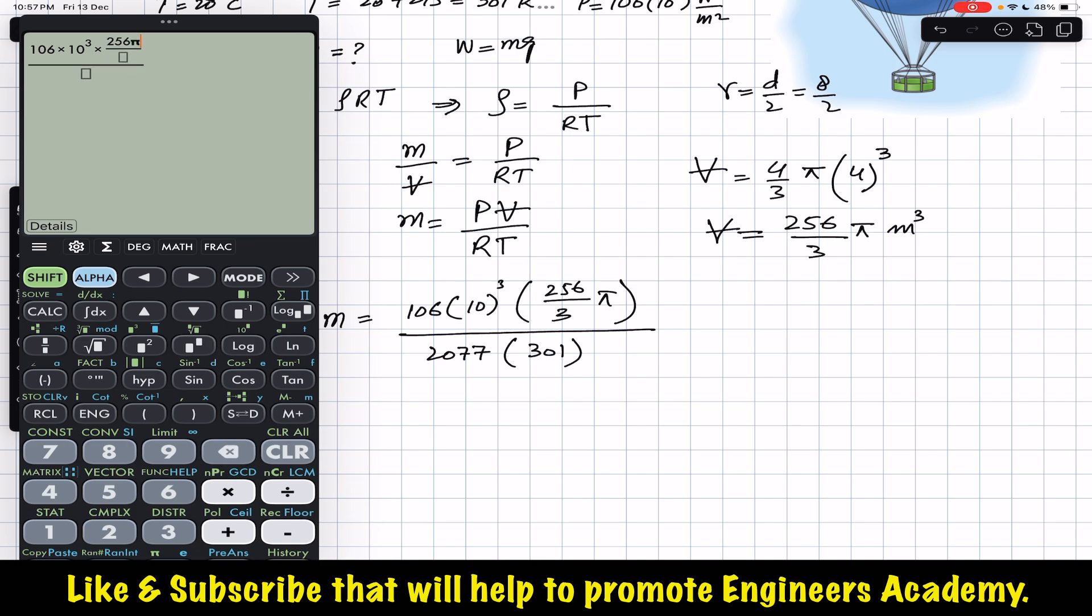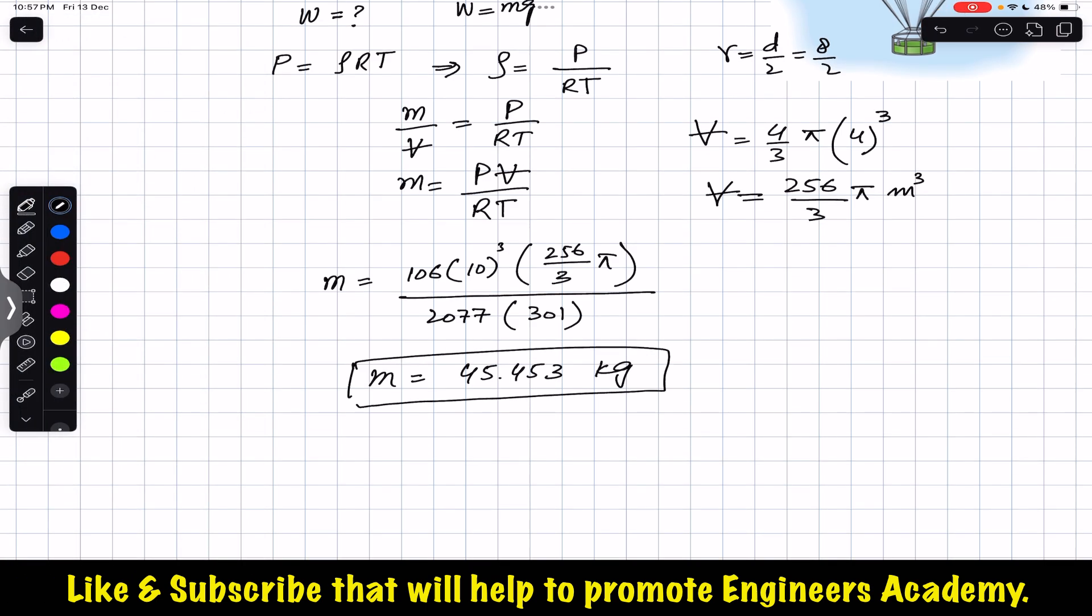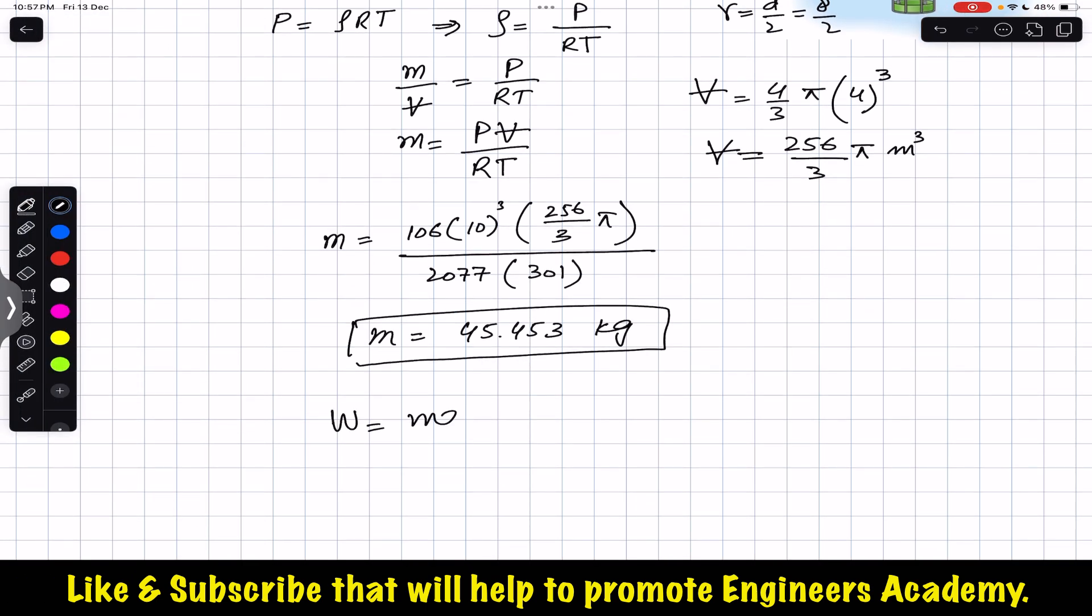So the mass is equal to 45.453 kg. Now we want to find the weight. We have to multiply this with g. So the weight is equal to mass times g.